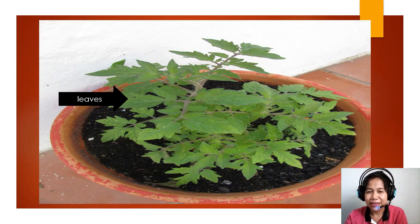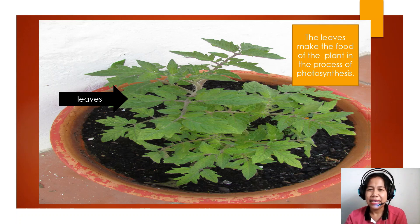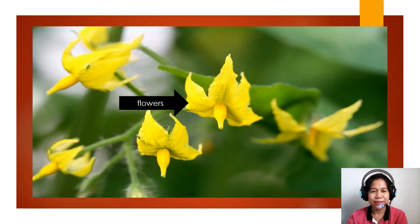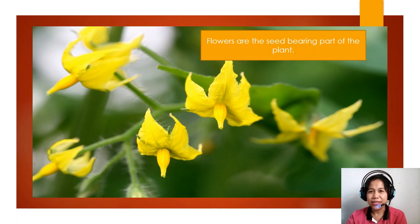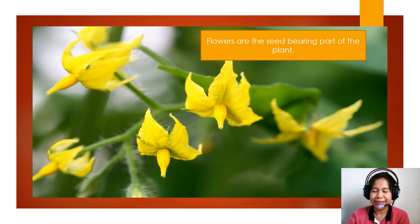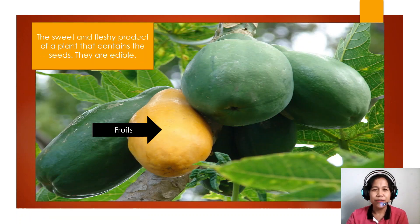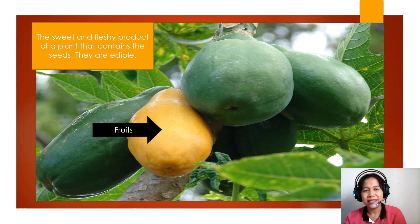The leaves. The leaves make the food of the plant in the process of photosynthesis. The flowers are the seed-bearing part of the plant. The fruits are the sweet and fleshy product of a plant that contains the seed. They are edible.